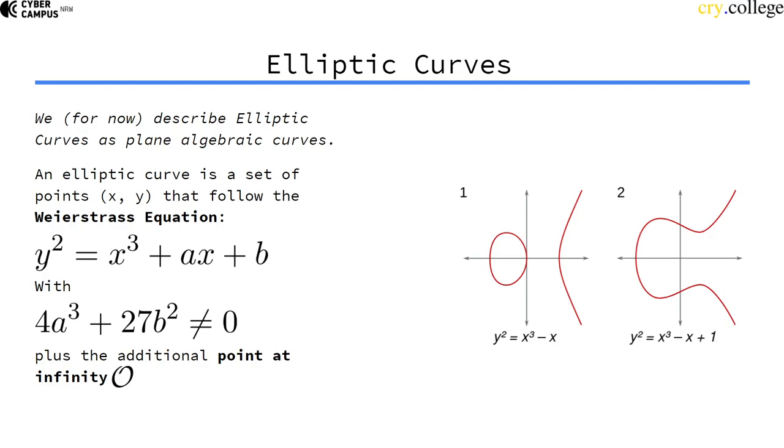An elliptic curve is a set of points, a set of points with an x value and a y value that follow the Weierstrass equation.